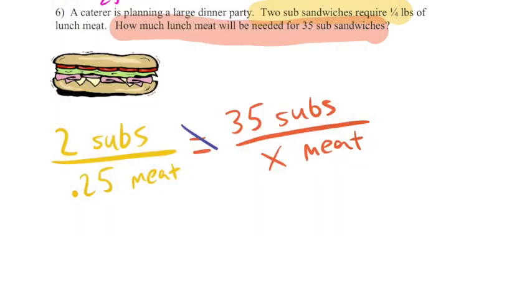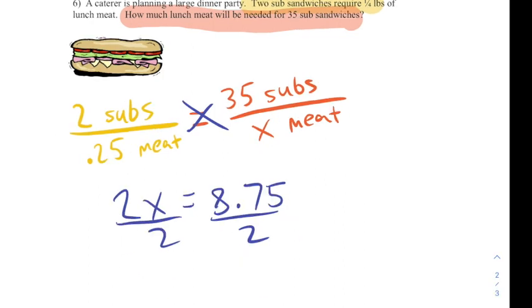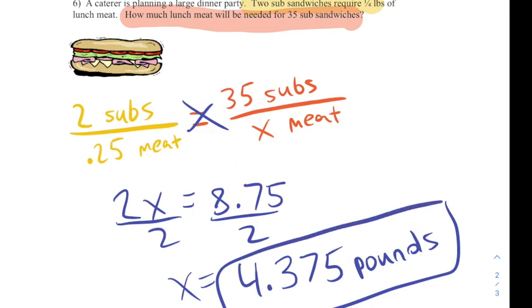And this problem will again be solved by cross multiplying. Two times X equals 35 times a quarter. That's 8.75. I divide both sides by 2, and I get X equals 4.375. Now remember, X represented an amount of meat, a number of pounds of meat. So we'll say 4.375 pounds to make sure our answer has context at the end.